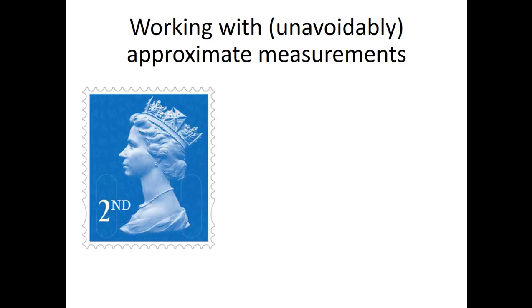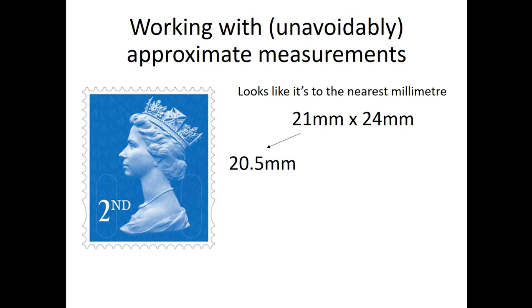Let's look at our stamp again. Now, according to the post office, it measures 21 millimetres by 24 millimetres. That looks to me like it's been measured to the nearest millimetre. Working back from what you know about rounding, that means it could be as short a length as 20.5 millimetres, because anything of 20.5 or above rounds up to 21. In the same way, it could be anything up to 21.4999 millimetres, because anything up to there will round down to 21 millimetres. This brings us to the idea of bounds.